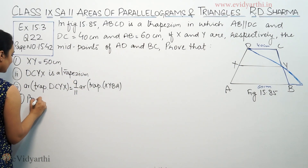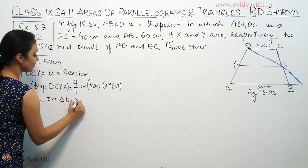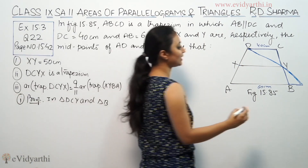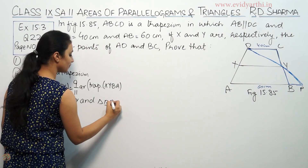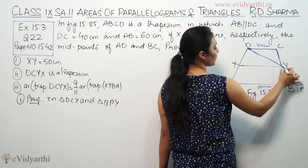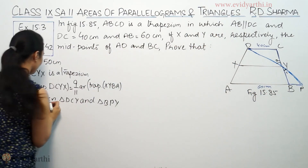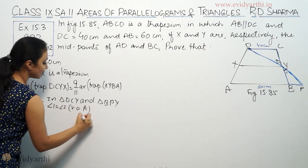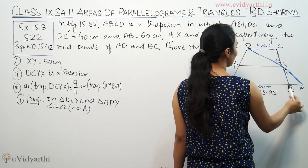Step 1 and 2: In triangle DCY and triangle DPY — supposing we call this point P — the most important thing is the vertically opposite angles. Angle 1 equals angle 2 by vertically opposite angles. And since these lines are parallel, DC is parallel to AB.